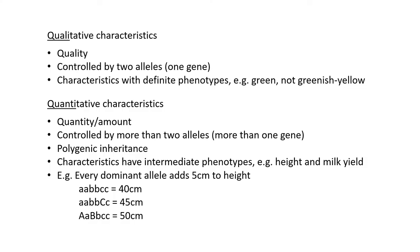Quantitative characteristics refer to quantity - controlled by more than two alleles, generally more than one gene. There can be many options within one characteristic, something in between extremes. This is called polygenic inheritance - poly means many, genic refers to genes, so many genes are inherited. Height is the classic example because you don't just get very short or very tall individuals; you get many heights in between. Milk yield in cows is another example - it can be anywhere in between, influenced by environment, diet, water intake, and genes.